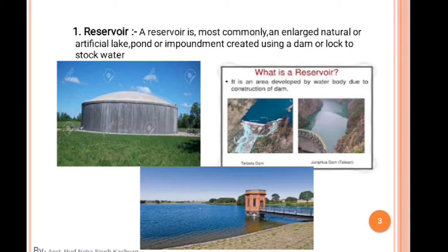This is the arrangement we put in the reservoir category. It could be artificial or natural. Natural reservoirs include ponds, rivers, or lakes. All these fall into the reservoir category where water can be collected over a huge area.